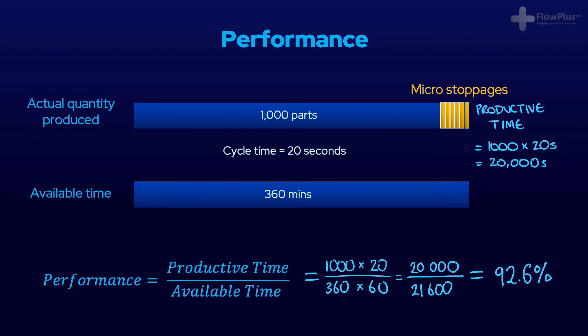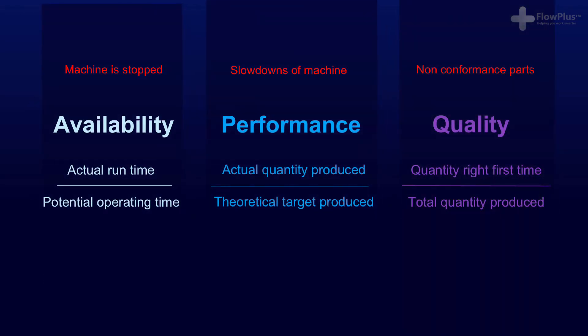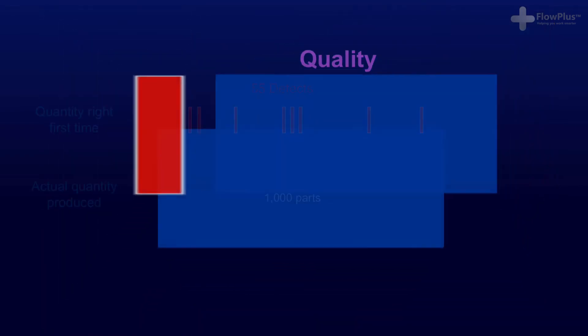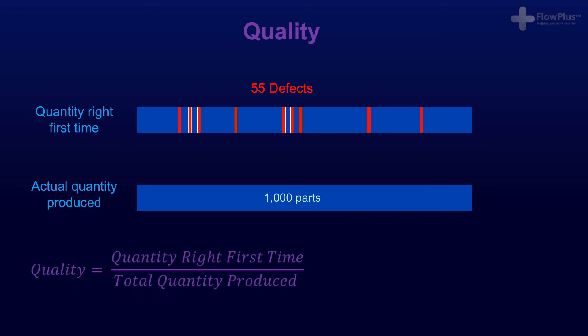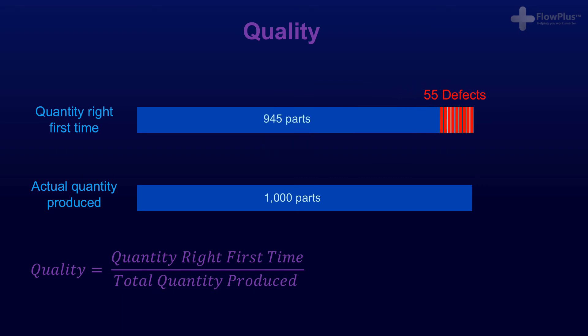A quick point to note: even if products are defective, they should still be included within the productive time. Now that we have taken into account availability losses and performance losses, we need to take into account quality losses. Quality rate is the number of right-first-time parts divided by all the parts produced. For example, if 55 out of 1,000 pieces are defective, that would leave 945 being right-first-time out of 1,000, which equates to 94.5%.